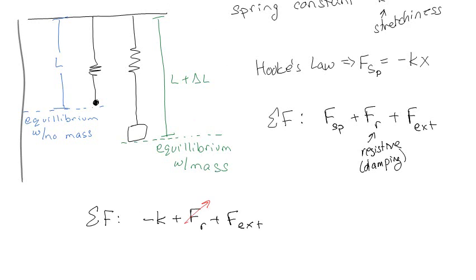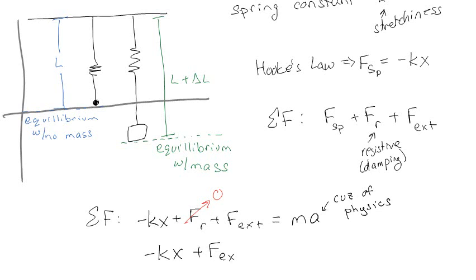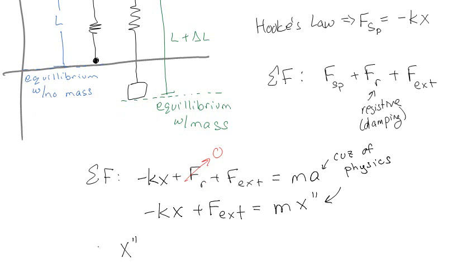We're going to plug in some values. The sum of the forces is negative kx plus the resistive force plus external forces. We're going to pretend this is zero for the moment. We have no mass going on right now. I know because of physics that the sum of the forces is mass times acceleration, so negative kx plus external forces equals m times x double prime. I go ahead and solve this: mx double prime plus kx equals all the external forces.